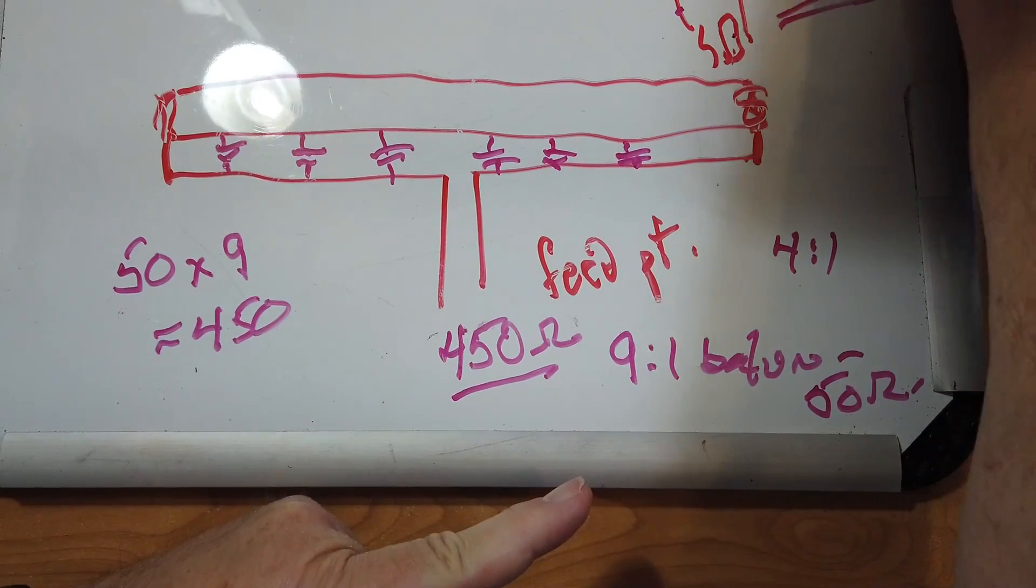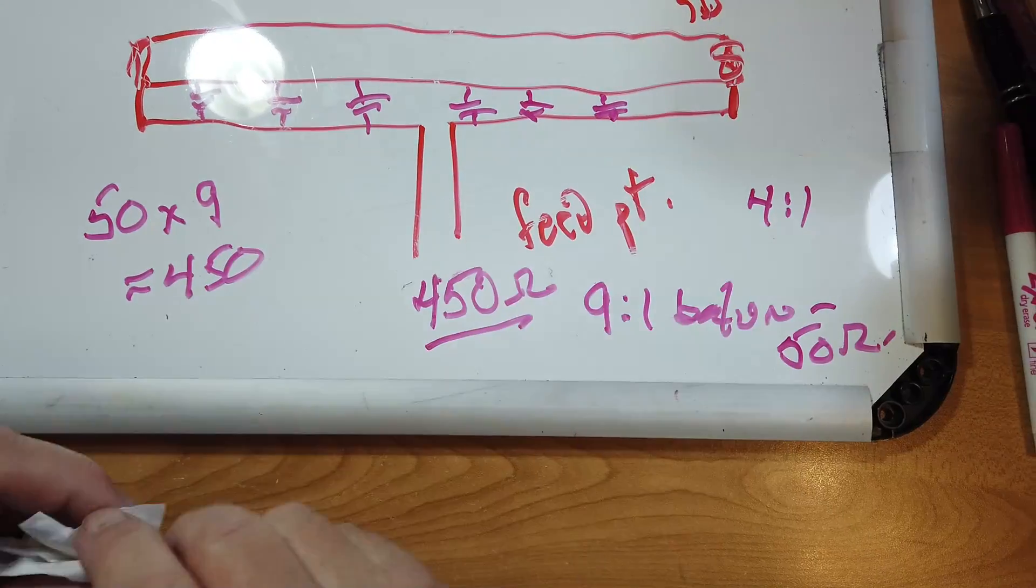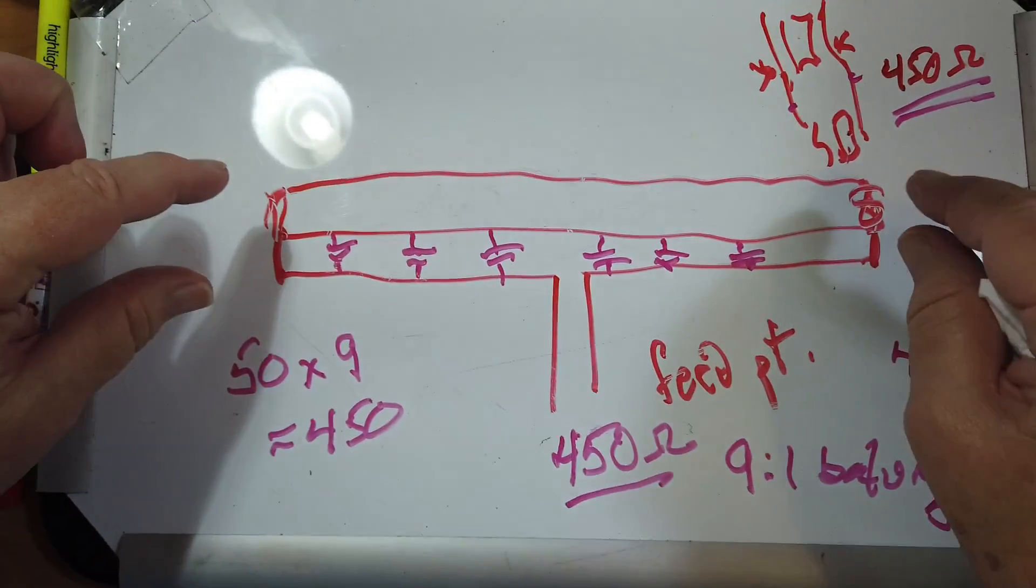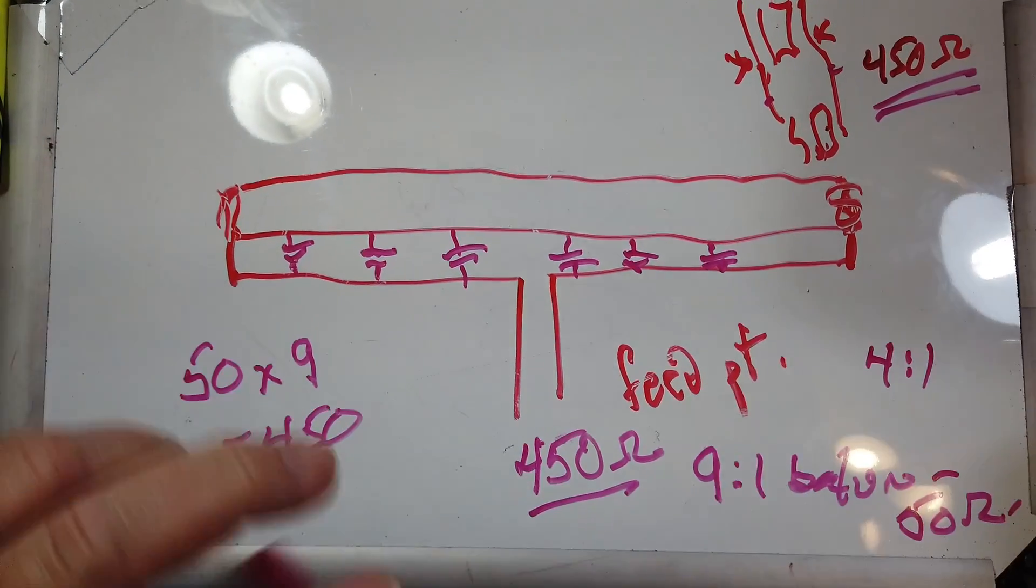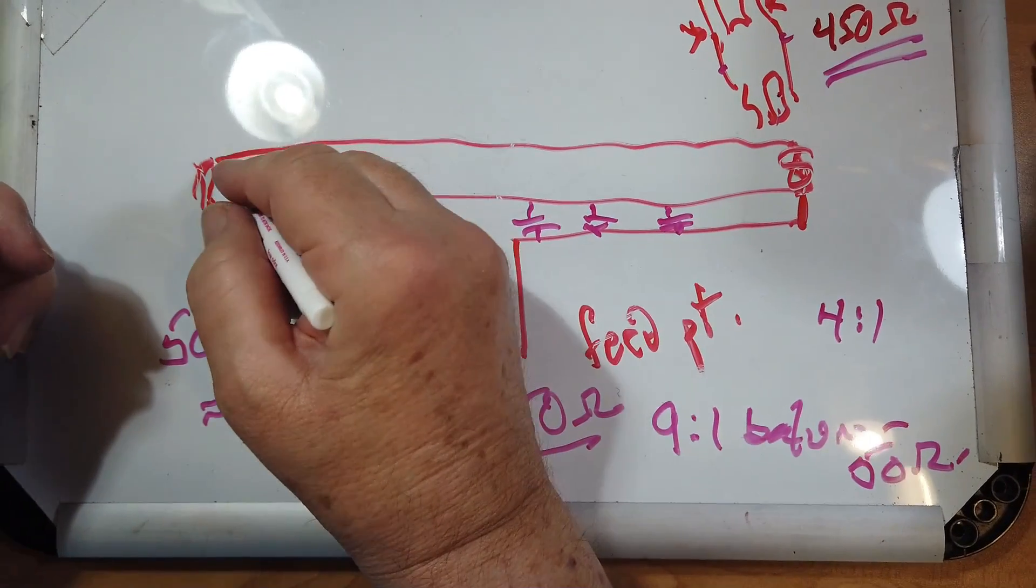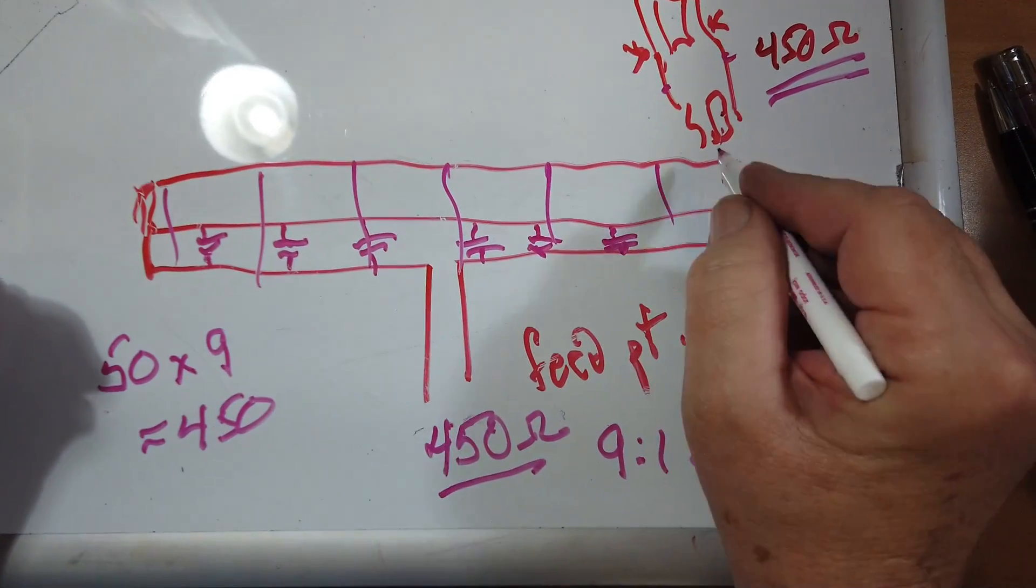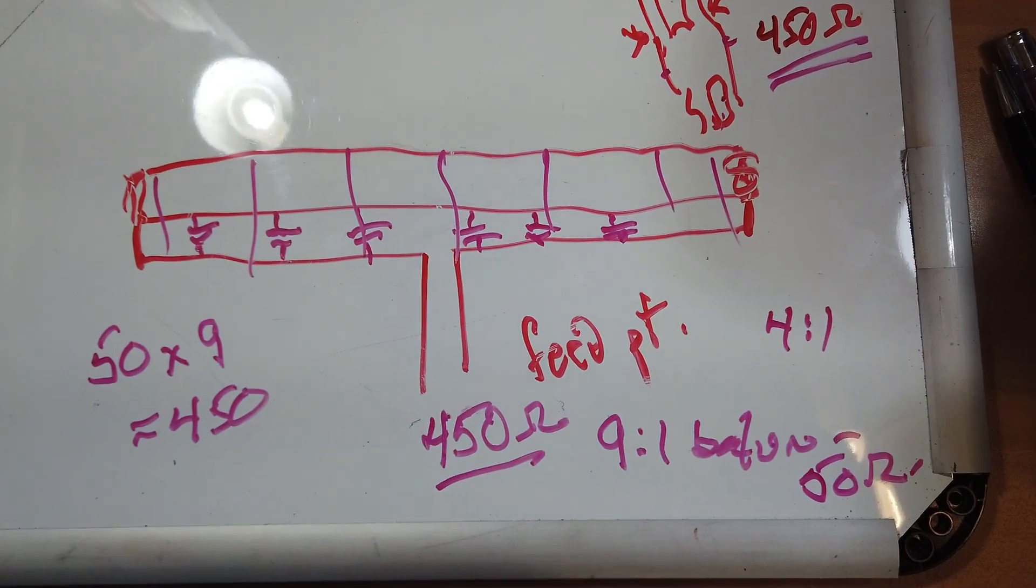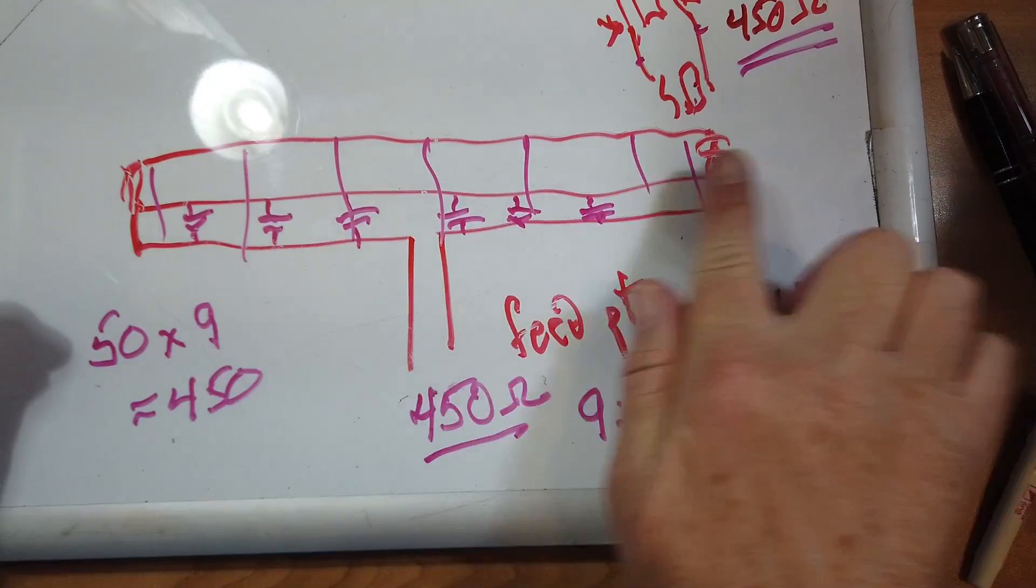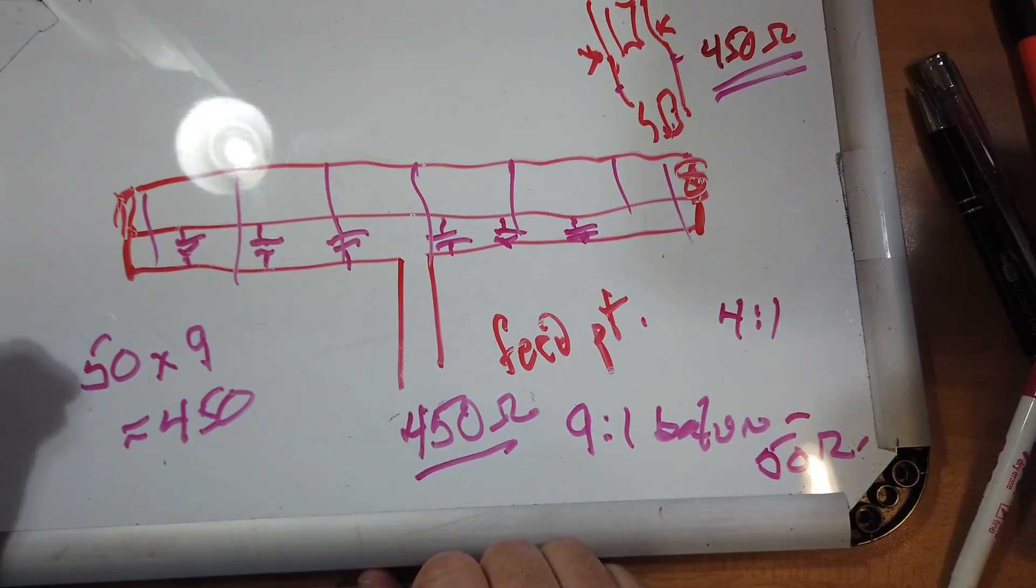Nine-to-one baluns are readily available, and the 450 ohm ladder line is readily available. So, you can make this thing right here with just three conductors. You can create little plastic spacers that go along here that you can thread those wires through so that they stay the same distance apart. It's kind of important that they stay the same distance apart so you get nice, even impedance matching and get a nice radiation pattern out of it.